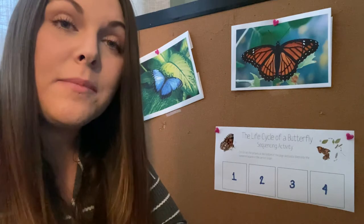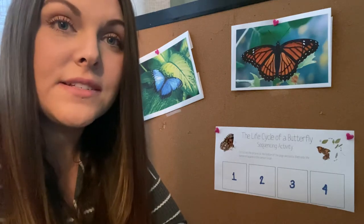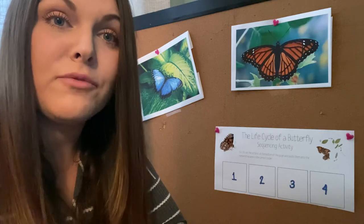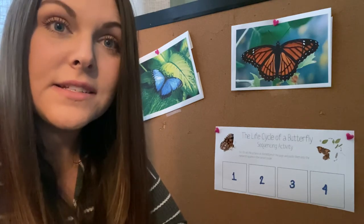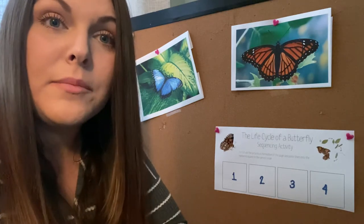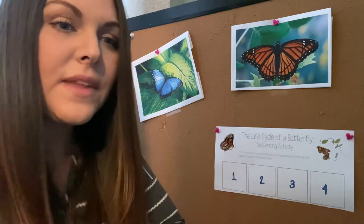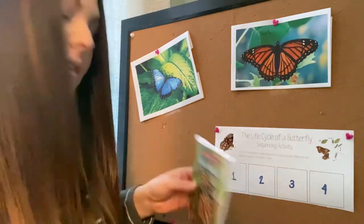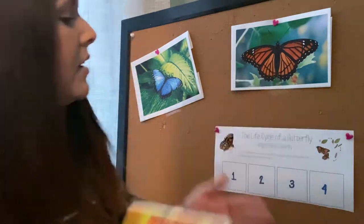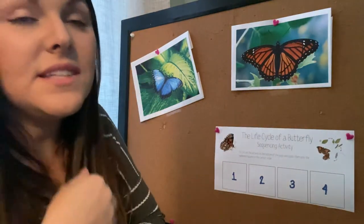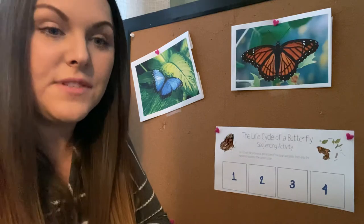Now we've been learning a lot about expository text over the past month and different ways that we can find the most important information in the text, and authors use different ways to show us that information. So today we are going to read a book about the butterfly life cycle and then we're going to use a graphic organizer to show the sequence in order of a butterfly's life cycle.